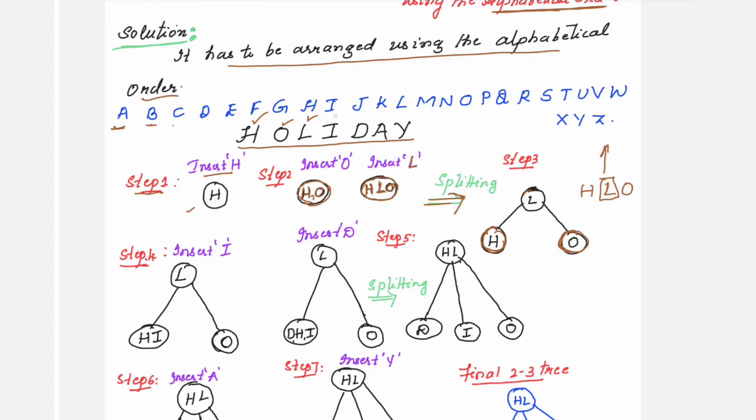Next is the element I. Insert I. Where will you place I? I comes before L, so it will be towards the left side. Here already there was an element H. I comes after H, so you place I after H. Then the other child node O will be as it is.